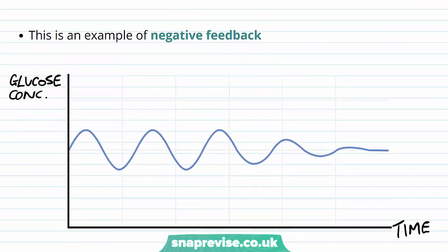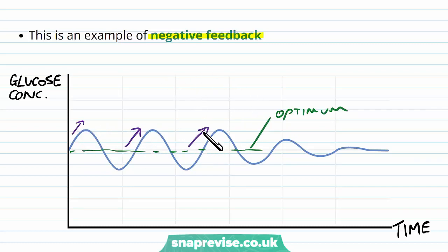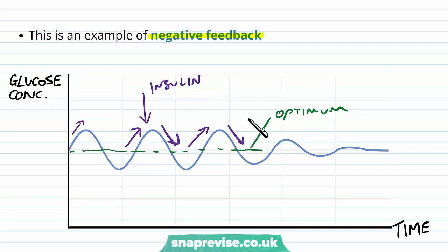This is a good example of negative feedback. If we have a graph with time and glucose concentration, it oscillates up and down, but it mainly centers around an optimum value. If the blood glucose ever goes up above the optimum, insulin gets released and brings the glucose back down to the optimum. It's always reversing the change, and therefore this is negative feedback.